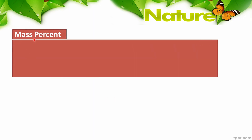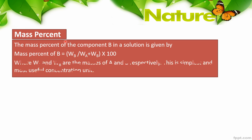First, we have mass percent. The mass percent of component B in a solution is given by the mass of B divided by the total mass of the solution, multiplied by 100.